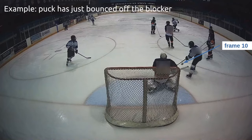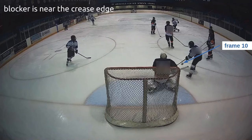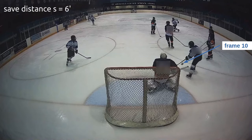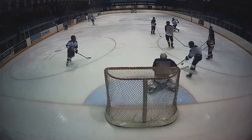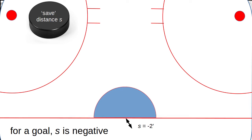So in this clip we're looking at, on the tenth frame of the shot, the puck has just hit the goalie's blocker and bounced off to the right. The position of the blocker is more or less over the edge of the crease, so the save distance here is six feet. On the other hand, if a goal was scored, the last frame of the shot might show the puck inside the net behind the goal line — in that case, the save distance would be a negative number.